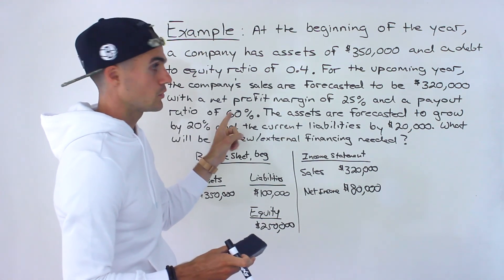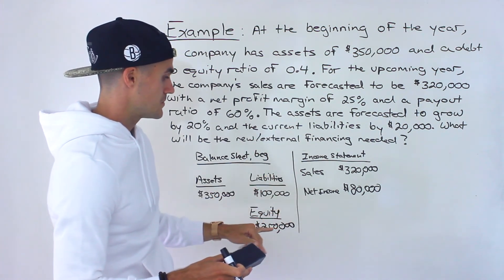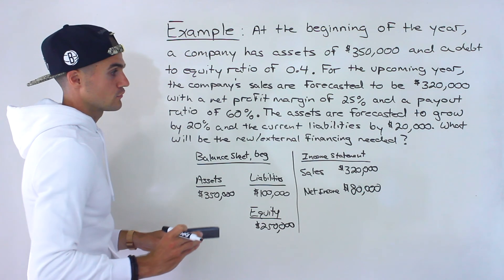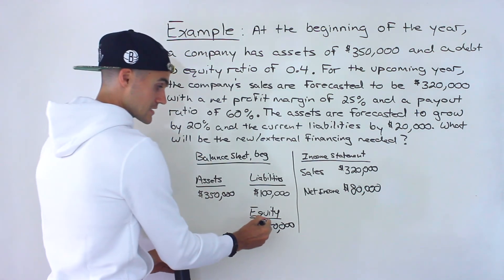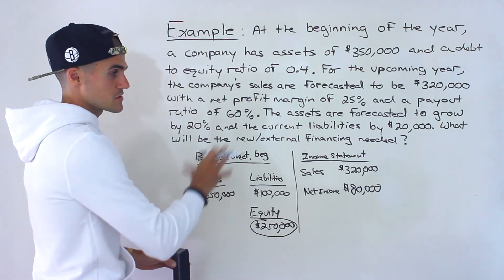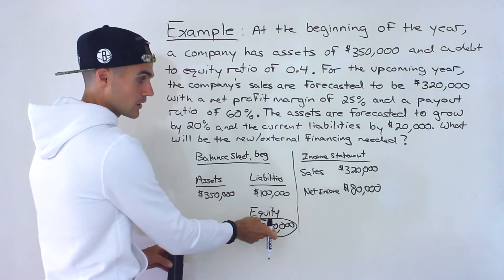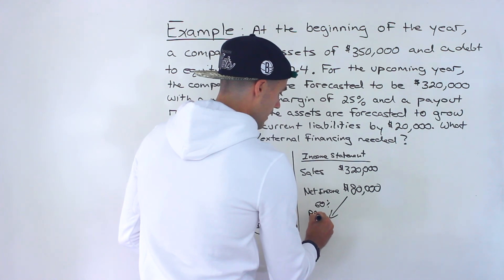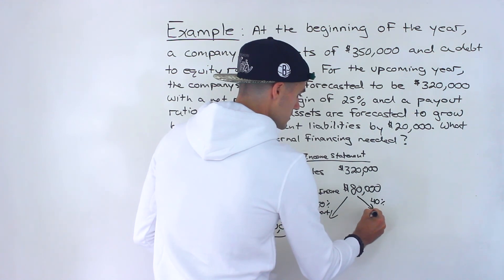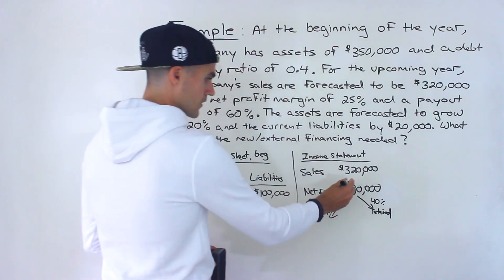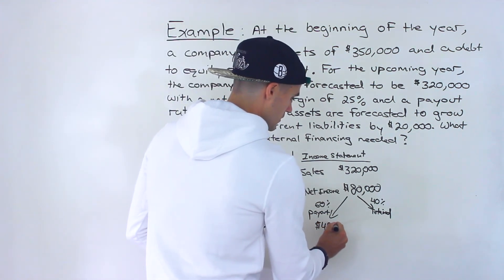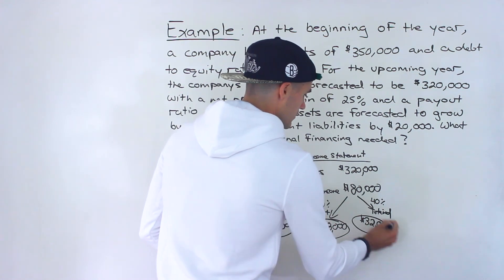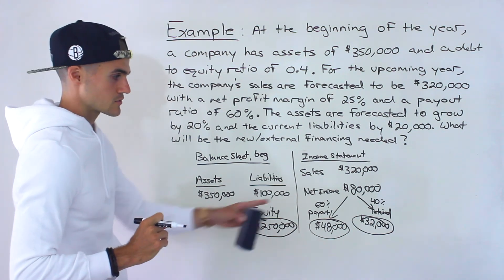The payout ratio is 60%, so the retention ratio is 40%. We need the retained amount because it gets added to equity on the future balance sheet. 60% of $80,000 is $48,000 paid out, and 40% of $80,000 is $32,000 retained. We'll use the $32,000 retained earnings going forward.